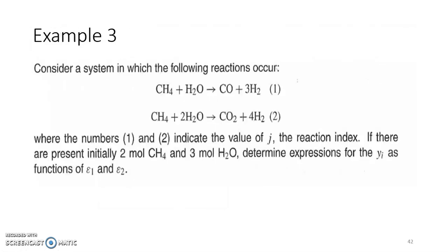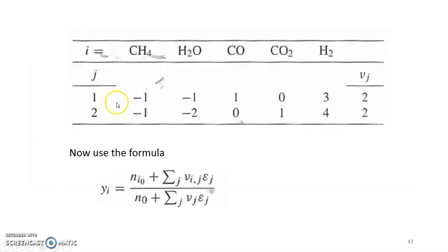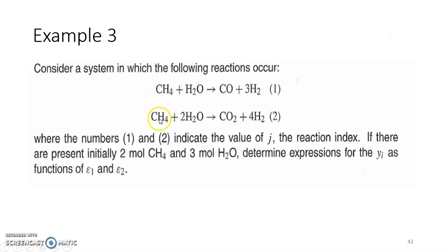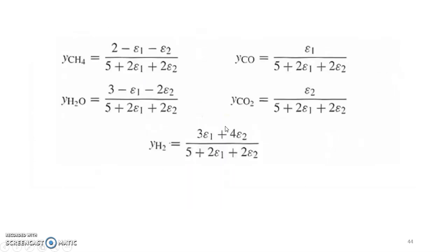The easiest way to do this is to find out individual number of moles by just looking at the reaction and stoichiometry. For methane, it is 2 minus epsilon 1 minus epsilon 2. For H2O, it is 3 minus epsilon 1 minus 2 epsilon 2. For CO, it is epsilon 1. For hydrogen, it is 3 epsilon 1 plus 4 epsilon 2, since it is a product. For CO2, it is epsilon 2. Making the summation gives the denominator term, which is equal to 5 plus 2 epsilon 1 plus 2 epsilon 2.